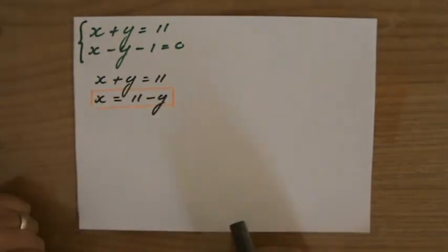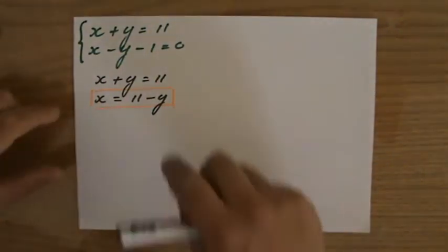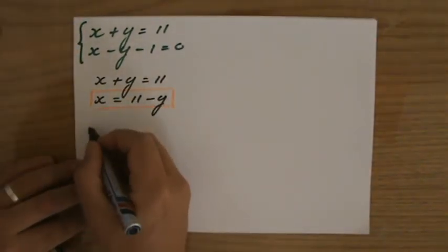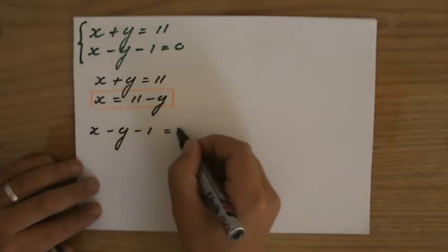x equals 11 minus y. I'm going to substitute that information now in the other equation. So, I wrote down the first one. I'm going to write down the second equation now, which has x minus y minus 1 equals 0.